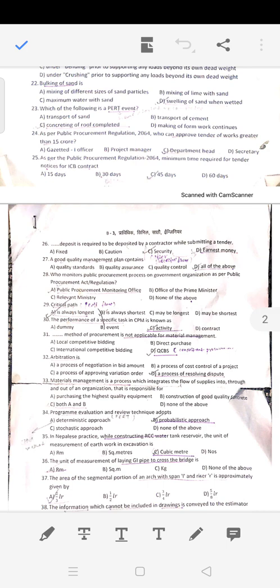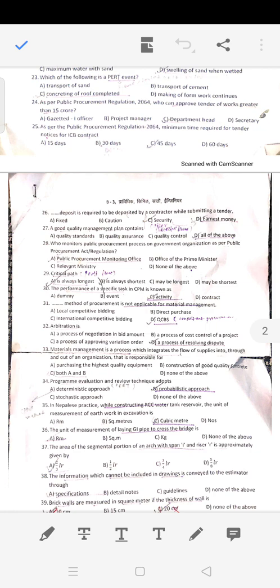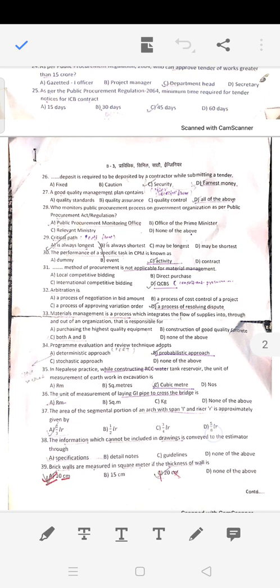Question 30: In CPM network, an arrow is known as activity. Question 31: In procurement, QCB stands for quality and cost-based selection for consultant selection. Question 32: Arbitration is the process of resolving disputes in construction management. Question 33: Material management is a process which integrates the flow of supplies in the organization. Question 34: PERT is program evaluation and review technique.